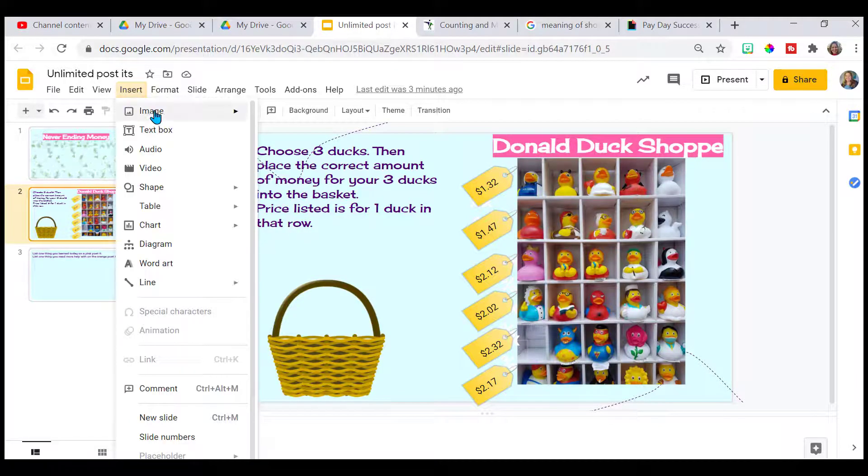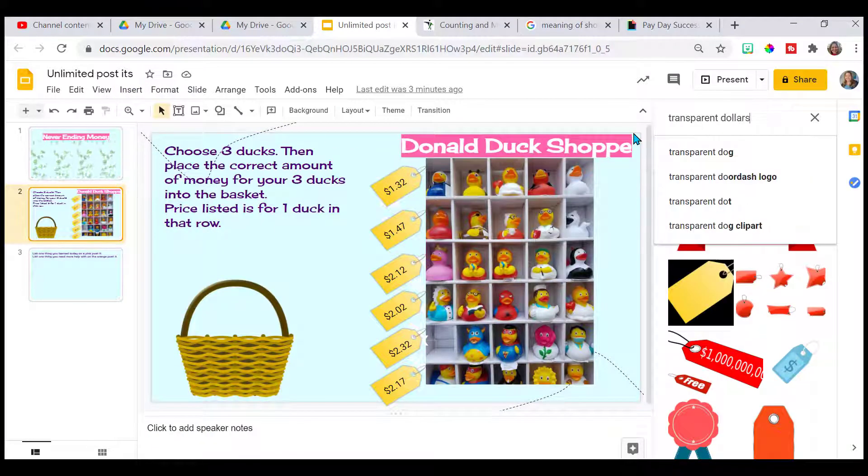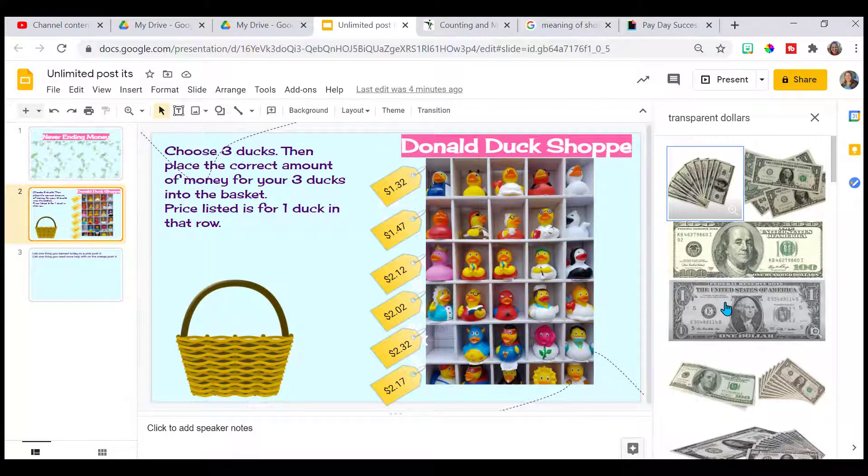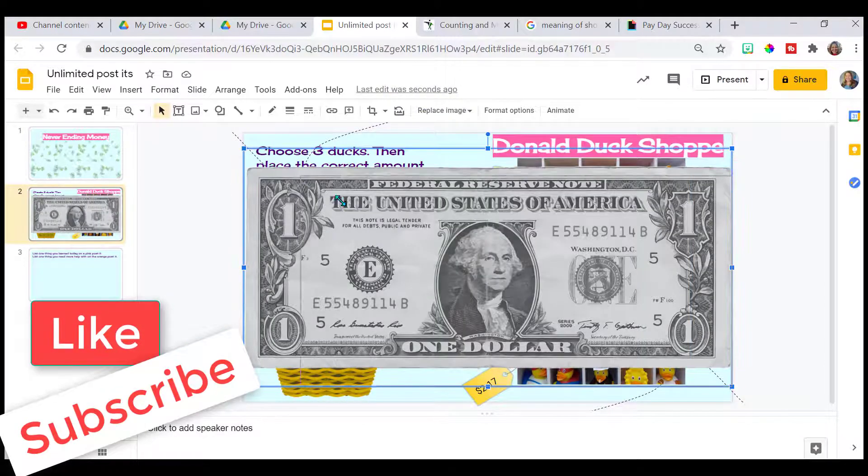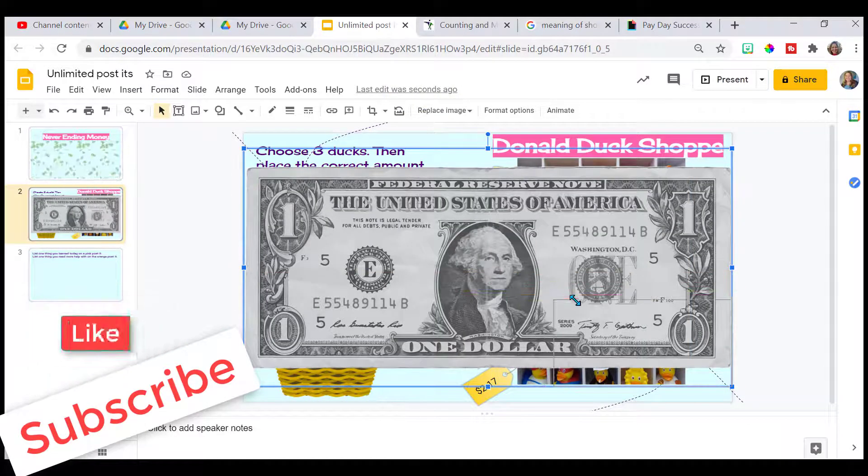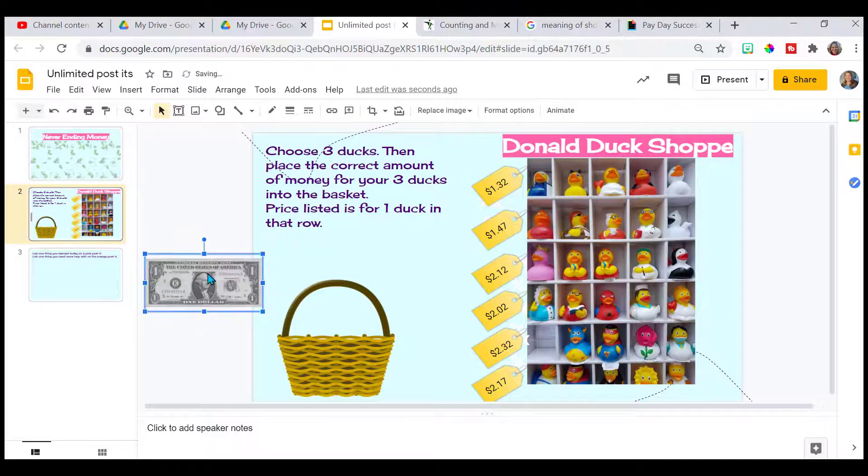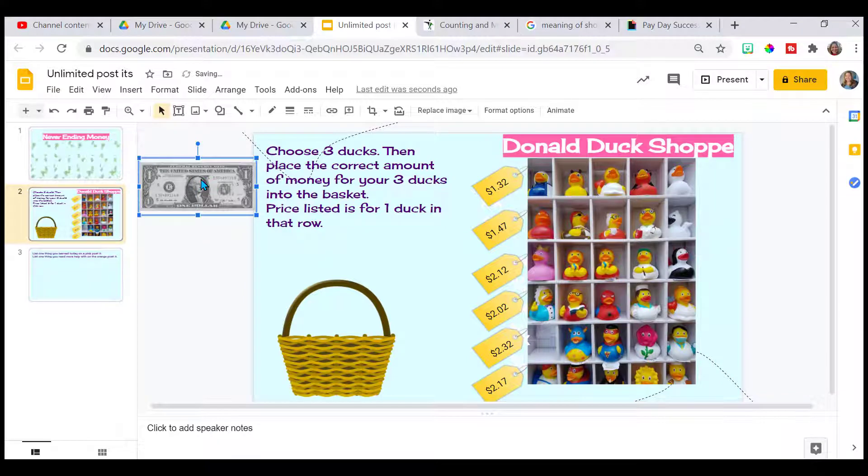Go to insert, image, search the web. We'll look for some dollar bills. This one looks good. We want singles, just one, right? So I'm going to shrink it down to size, still a little bit big.